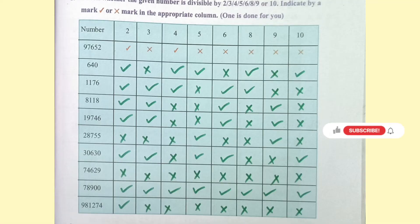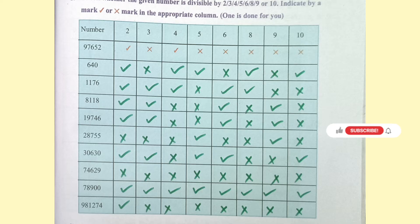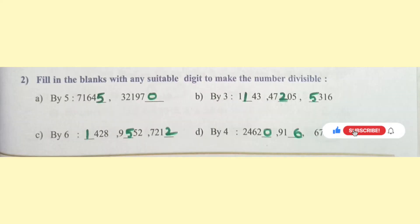Worksheet 5. Check whether the given number is divisible by 2, 3, 4, 5, 6, 8, 9, or 10. Indicate by a tick or cross mark in the appropriate column — 1 is done for you. Fill in the blanks with any suitable digit to make the number divisible.